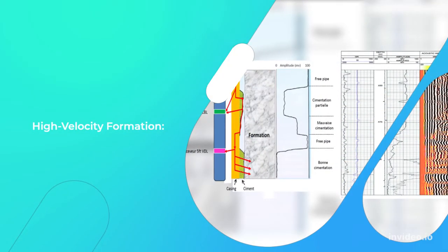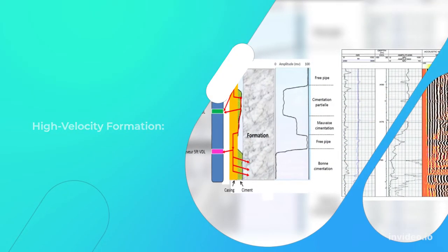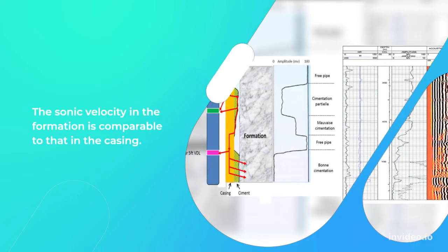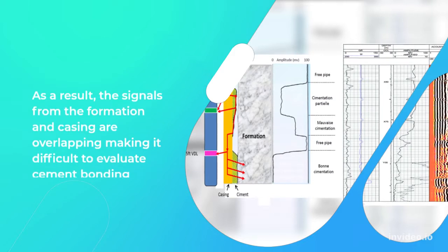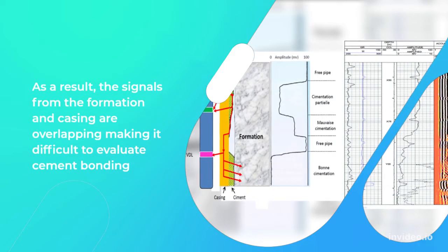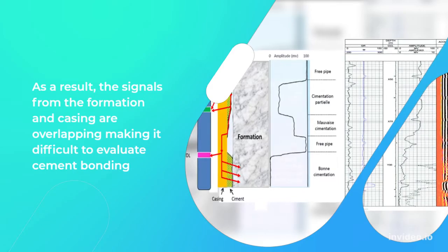High velocity formation: The sonic velocity in the formation is comparable to that in the casing. As a result, the signals from the formation and casing are overlapping, making it difficult to evaluate cement bonding.